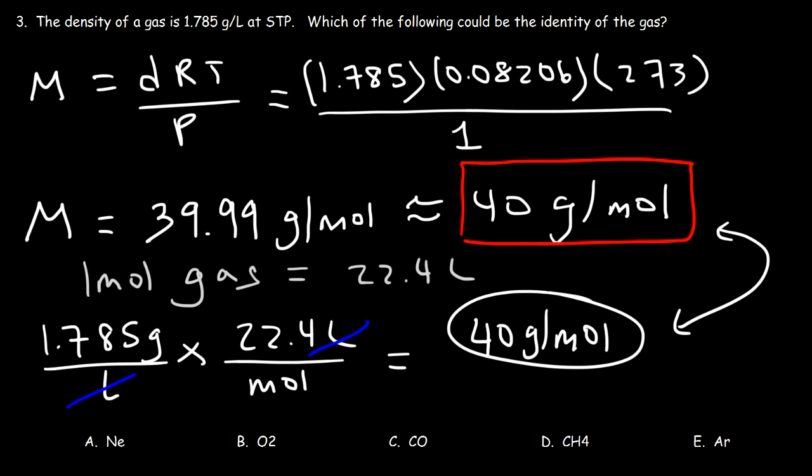So now, let's identify which gas has a molar mass of 40. Neon is about 20. O2 is 16 times 2, which is 32. Carbon monoxide, that's 12 plus 16, that's 28. Methane is going to be 12 plus 4, which is 16. And argon is 40. So E is the right answer.